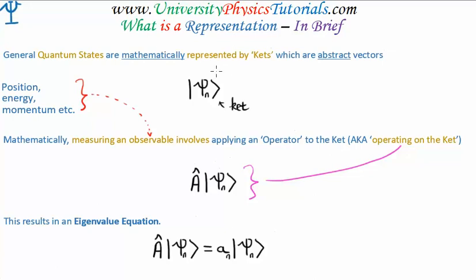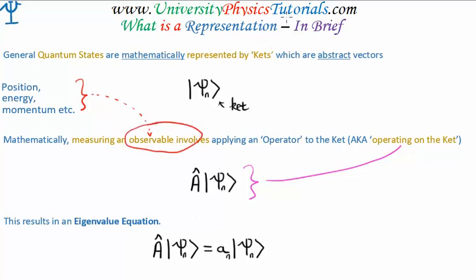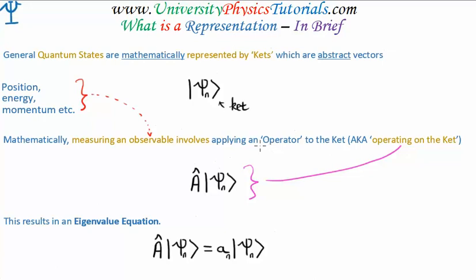So, we're talking about quantum state vectors. And a quantum state, of course, has various properties — such as position, energy, and momentum, and so on. And in quantum mechanics, we refer to these as observables. Mathematically, if you want to measure an observable, you must apply what's known as an operator on the particular ket, on your quantum state vector. And this is known as operating on the ket. In the centre of your screen, I have a general operator A — if it's got this little hat, it implies that we're talking about an operator.